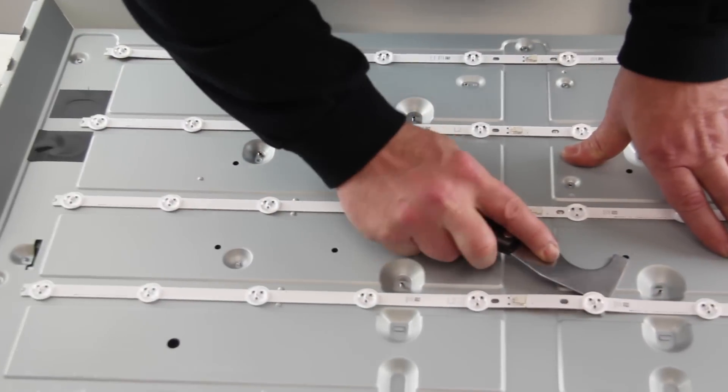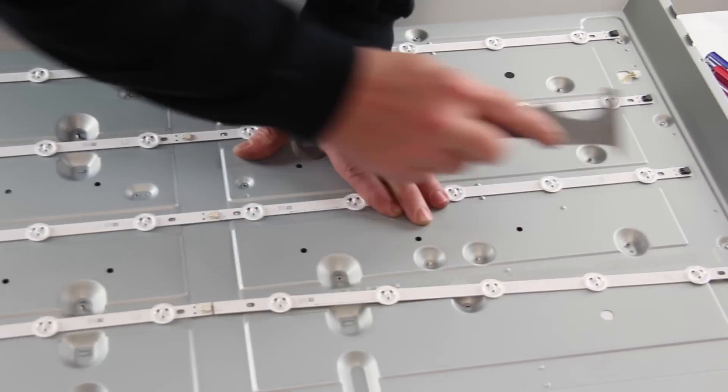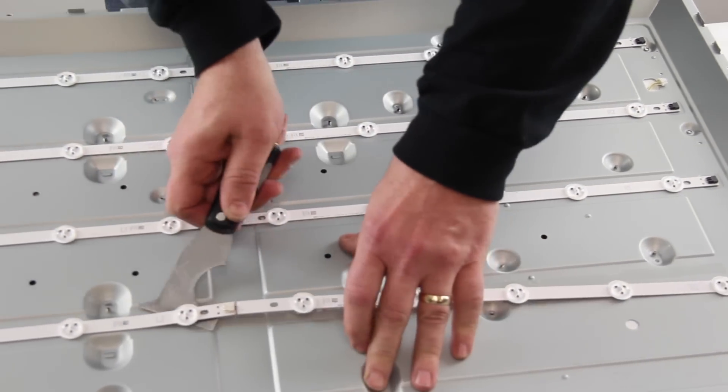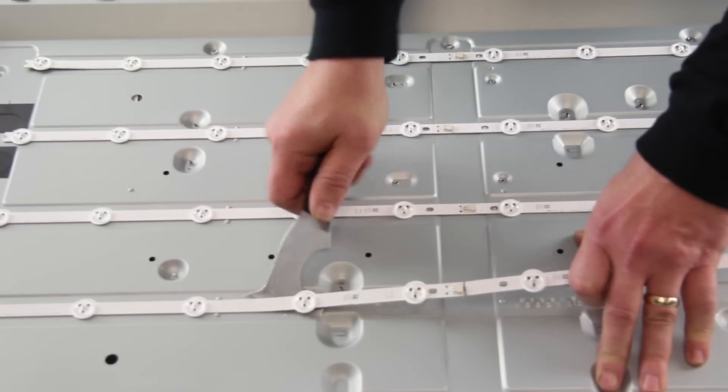If you do have a bad LED strip, it is recommended to replace all of the strips in your TV as once one of them goes out, they can all begin to fail.